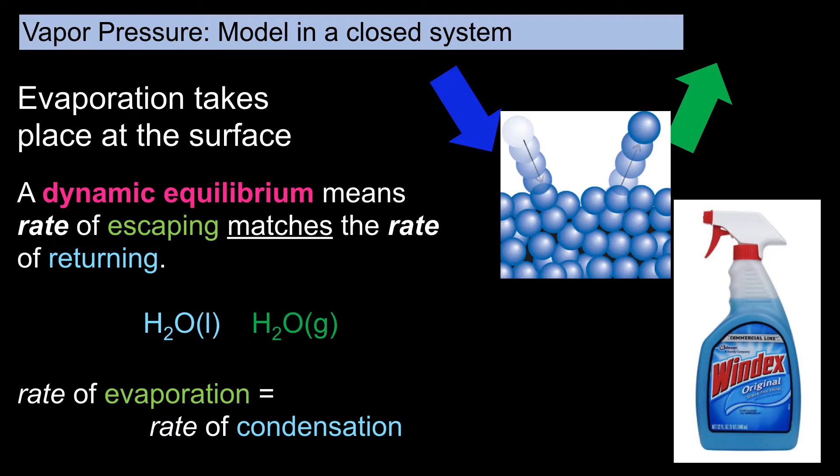Evaporation takes place at the surface of a liquid. If the liquid is in a closed container, like in this Windex bottle, the evaporation and condensation of the Windex achieves what is called a dynamic equilibrium.